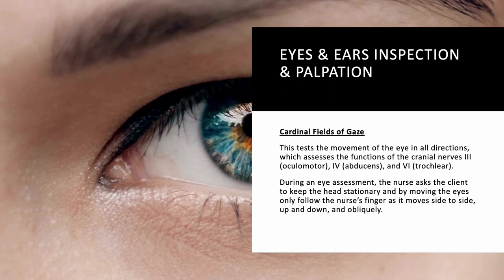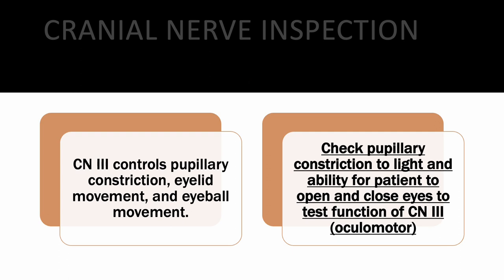For cranial nerves 3, 4, and 6, we check the cardinal fields of gaze to assess functionality. The nurse asks the patient to keep their head stationary and follow a finger moving side to side, up, down, and obliquely. This tests CN 3, 4, and 6. There is an additional test specific to CN 3 that we'll discuss on the next slide.